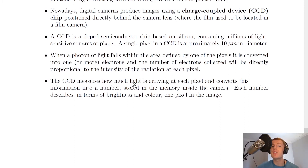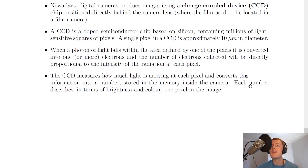The CCD then measures how much light is arriving at each pixel, and converts this information into a number stored in the memory inside the camera. Each number describes, in terms of brightness and colour, one pixel in the image.